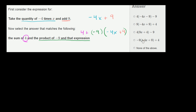Now let's see if any of the answer choices match what I just wrote. This one has 4 multiplied by negative 4x minus 9 and then subtracting 9 — that's very different, so I'll scratch that one out. This one has positive 9 times negative 4x plus 9 plus 4 — very close, but it has positive 9 instead of negative 9, so cross that out. This one has 4 times 9x plus 4 — we need negative 4x plus 9, and they're multiplying by 4 instead of negative 9, so that's wrong in multiple ways.